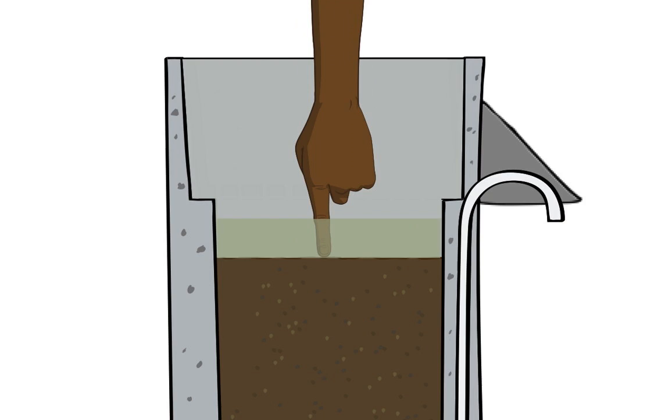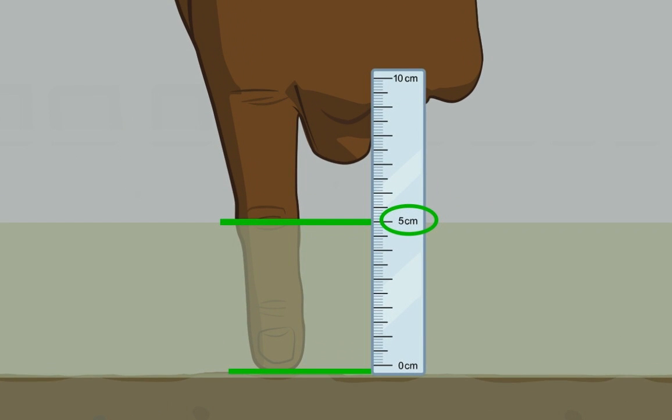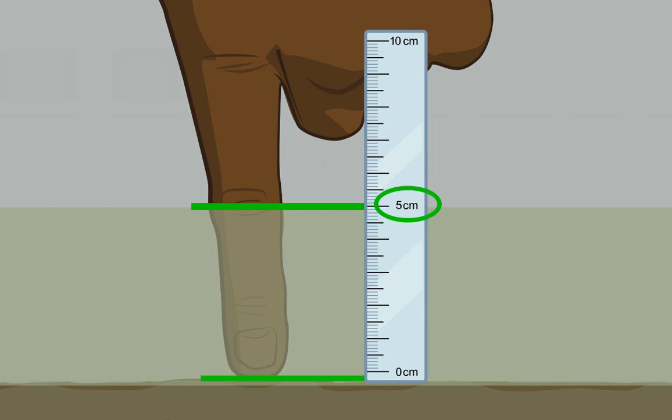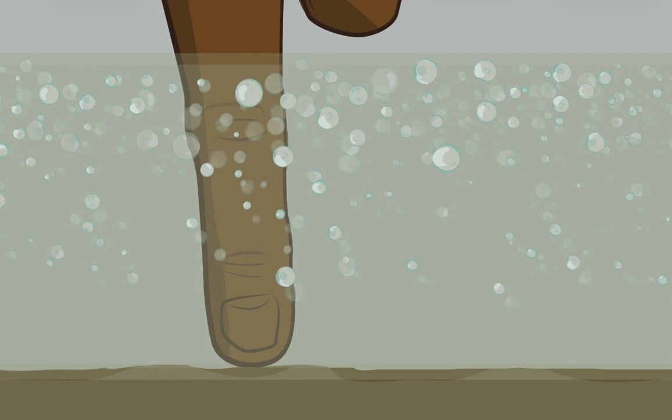It should be about five centimeters deep, about the height of your knuckles. If the standing water is deeper than this, oxygen can't reach the bio-layer.